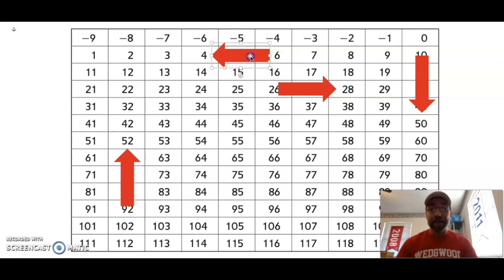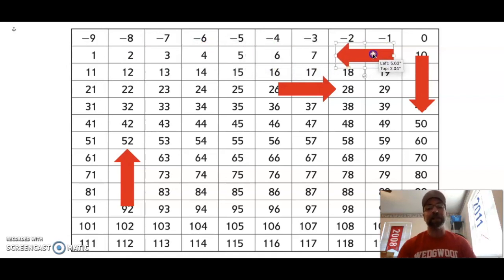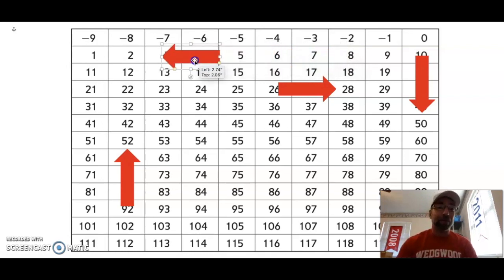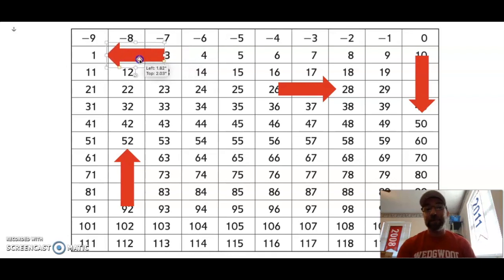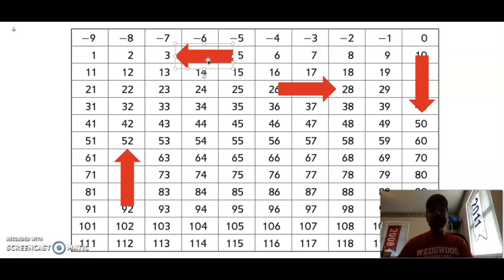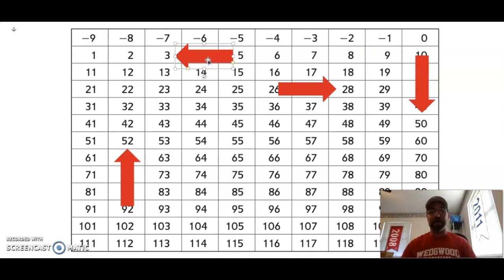On our number grid, if we go backwards and move to the left, we're going to smaller numbers. So we are subtracting one. Let's see if that's true: 7, 6, 5, 4, 3, 2, 1. So when we move to the left on our number grid, we are subtracting a number.